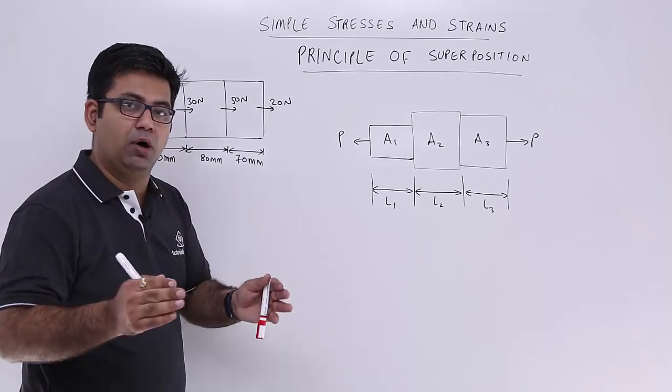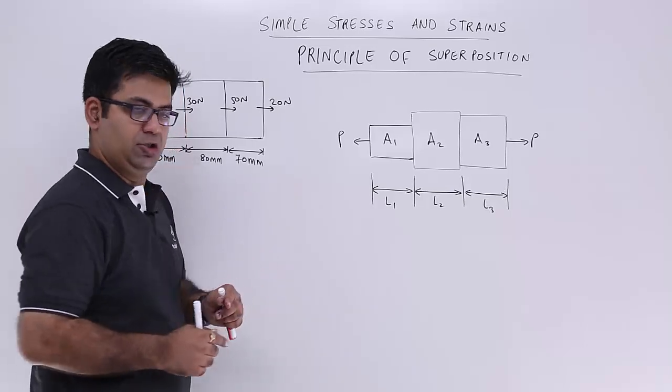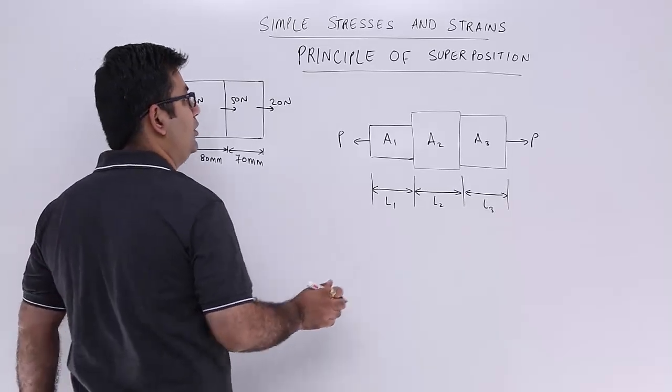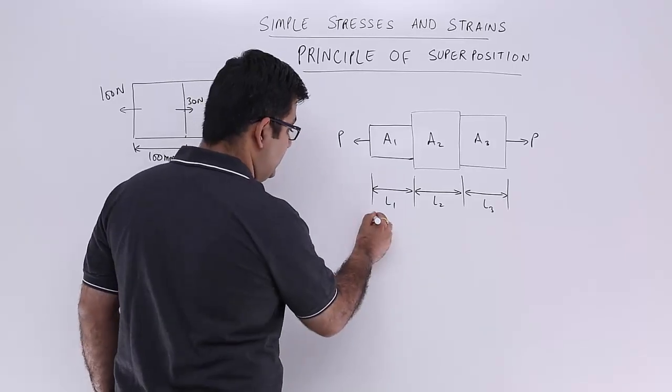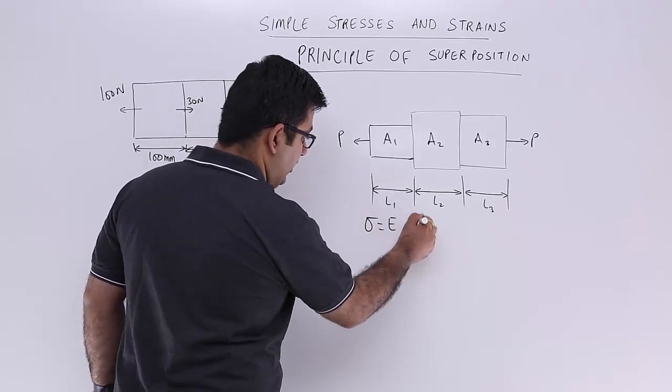To mathematically solve the questions on the principle of superposition we must always use this formula, that is Hooke's law, which is sigma is equal to E into epsilon.